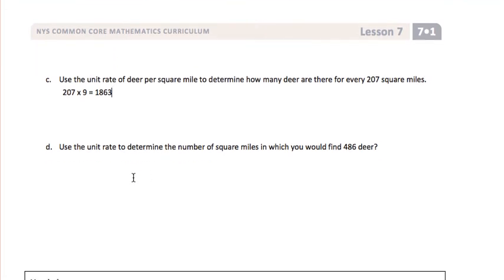Question D asks us to use the unit rate to determine the number of square miles in which you would find 486 deer. Since we are working backwards, instead of multiplying we would divide. We take 486 deer, divide it by 9 deer per square mile, and that gives us 54 square miles.